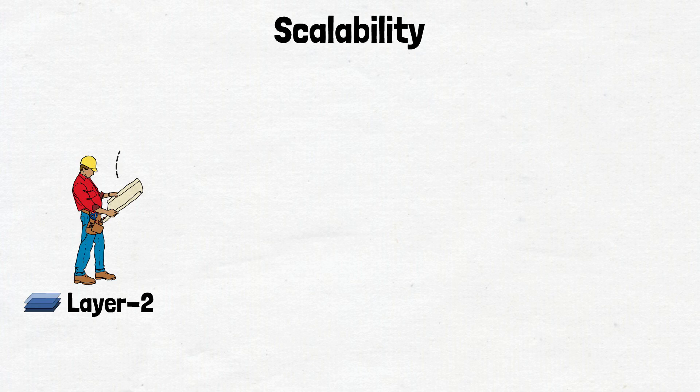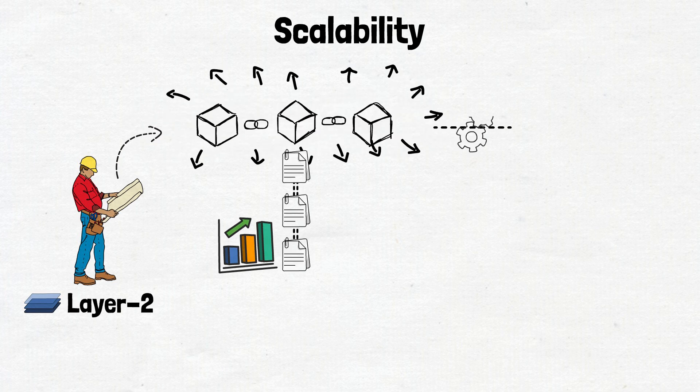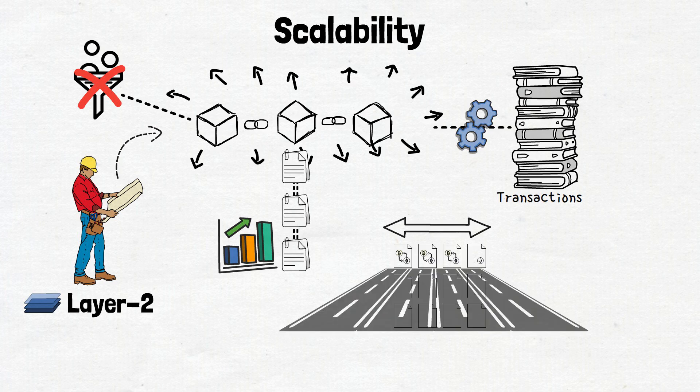Then, let's talk scalability. Layer 2 solutions are the architects behind a scalable crypto metropolis. They significantly increase the throughput of data, allowing the blockchain to process a higher volume of transactions without clogging the main network. It's like expanding a narrow highway into a multi-lane expressway. More room for transactions without causing a traffic jam.